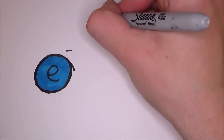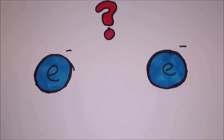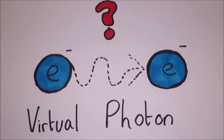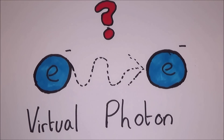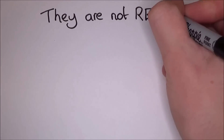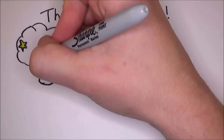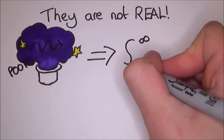When the electrons get near each other, how do they know that each other is there? How do they send a message to each other? The idea of quantum electrodynamics is that they send a virtual photon to each other. But what is a virtual photon? It makes no sense because they're not real — that is what virtual means. They are a mathematical creation so that the mathematical equations can be satisfied.